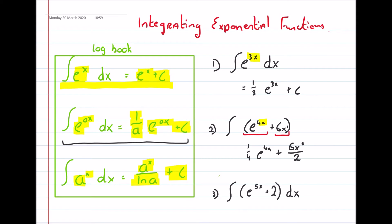Which is 2. So that can be simplified to 1/4 e^(4x) plus 3x squared plus c. We always add in our plus c.